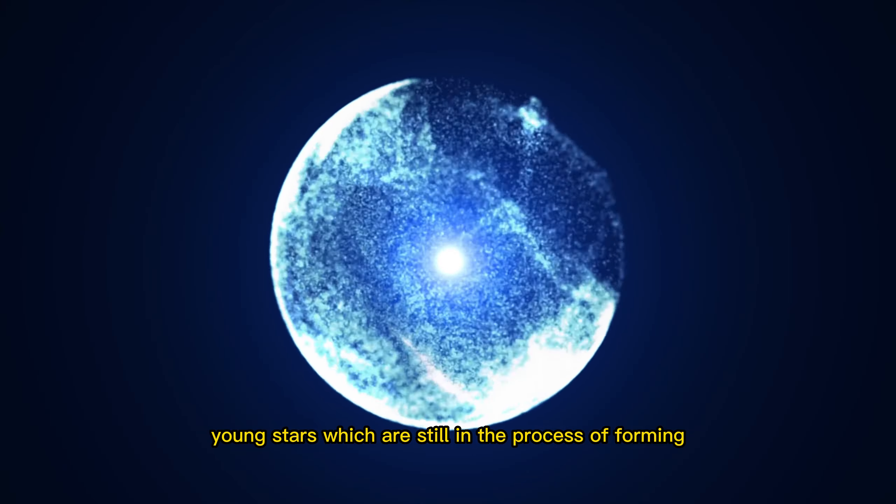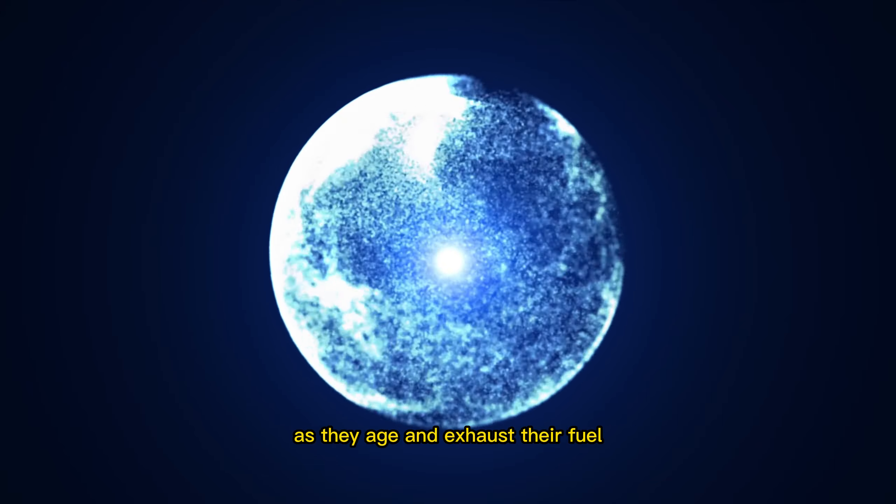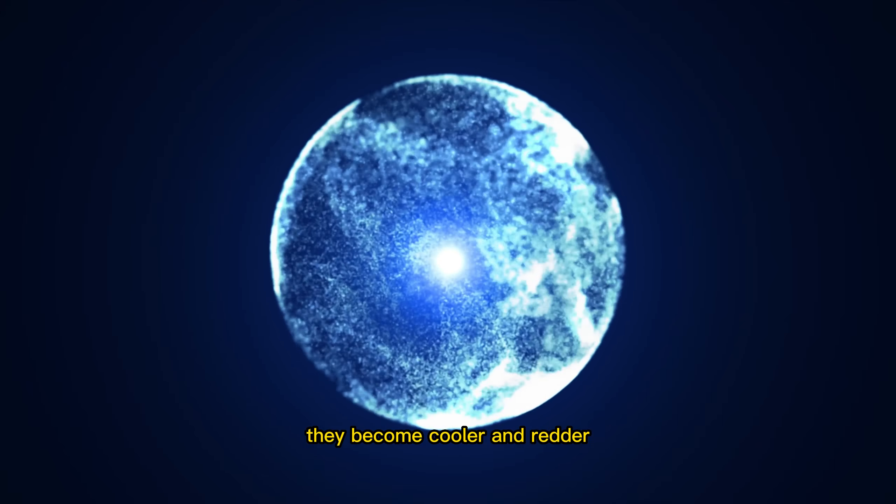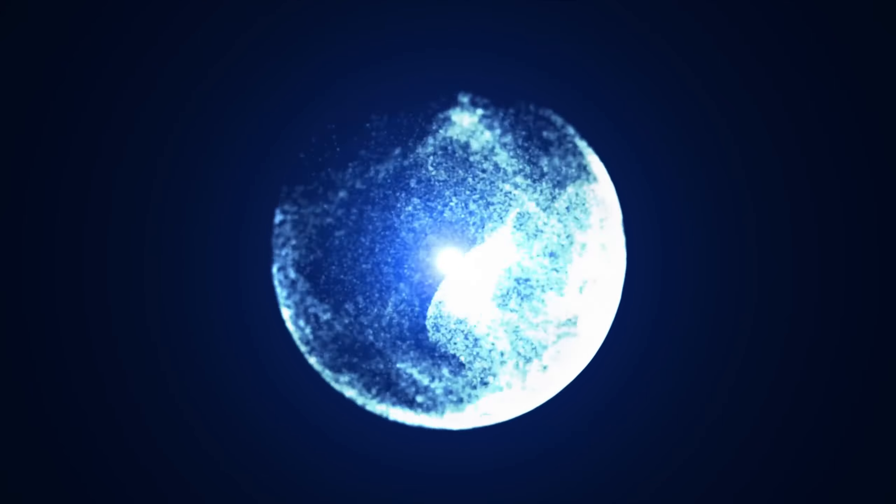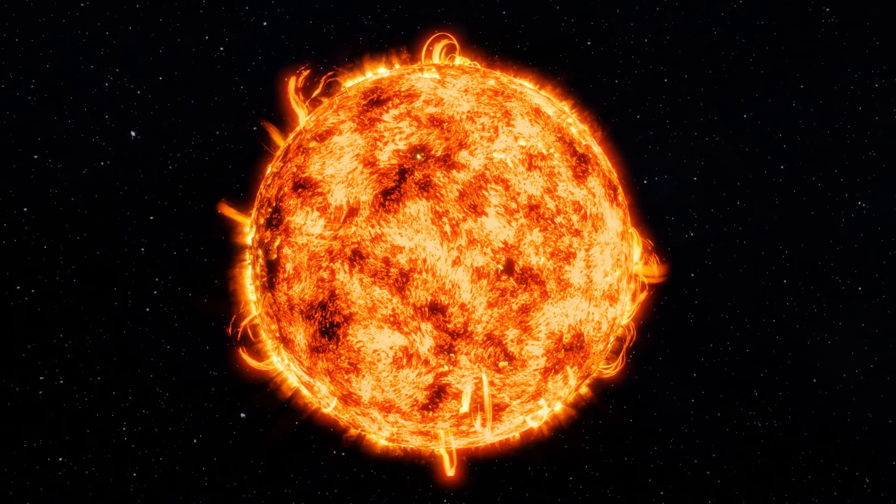stars which are still in the process of forming tend to be blue because they are very hot. As they age and exhaust their fuel, they become cooler and redder. Old stars such as red giants and supergiants are